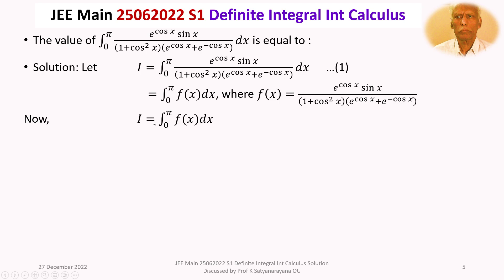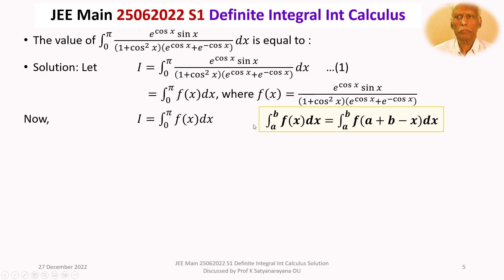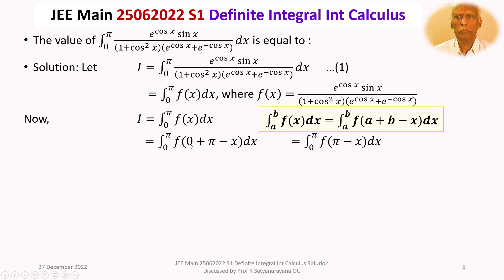We use the King's property, namely the integral from a to b of f(x) dx equals the integral from a to b of f(a + b − x) dx. Here a is 0 and b is π, so I equals the integral from 0 to π of f(π − x) dx.